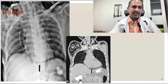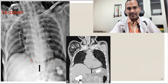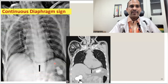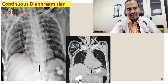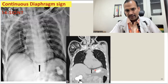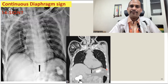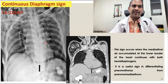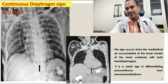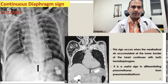Sign 14 is the continuous diaphragm sign. You can see hyperlucency below the heart, and the diaphragm is continuous from the right side to the left side. On CT scan, you can see the right diaphragm, then an air column, going straight to the left diaphragm. This is seen in trauma causing pneumomediastinum — whenever there is pneumomediastinum, we can see the continuous diaphragm sign.